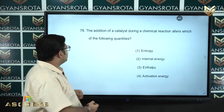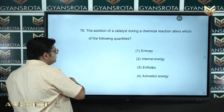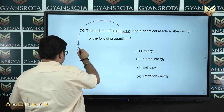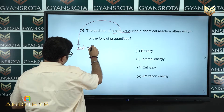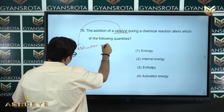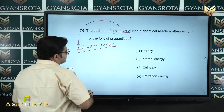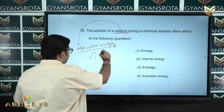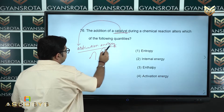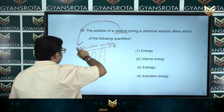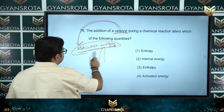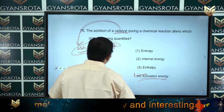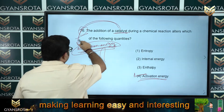Moving to the solution part: what a catalyst does is always affect the activation energy. It will not affect any concentration; it only affects the activation energy, lowering or speeding it down — it completely depends on the catalyst. So the catalyst affects activation energy. If you see option number 4, where activation energy is mentioned, that is the correct answer of question number 76.